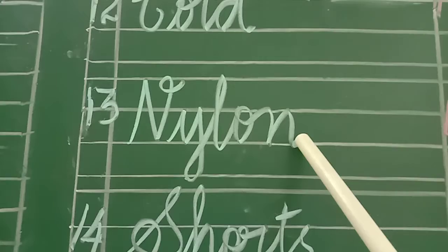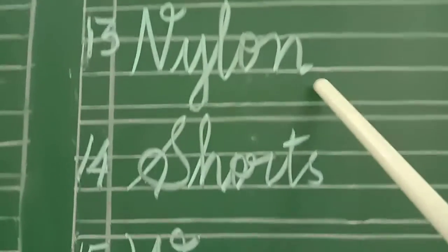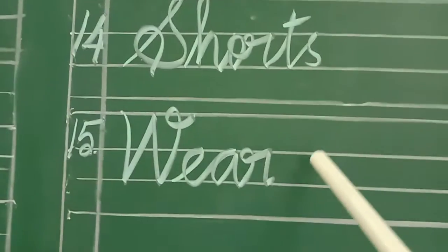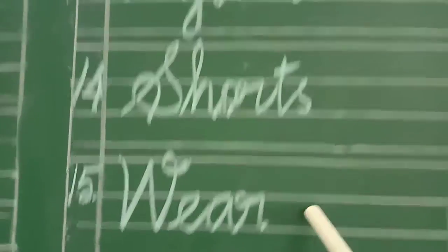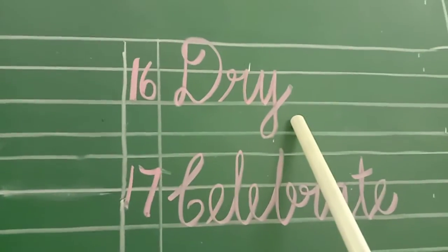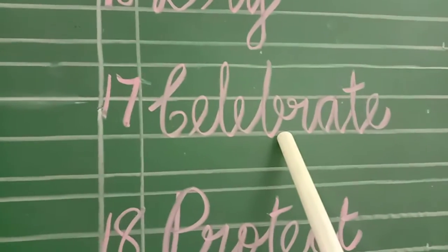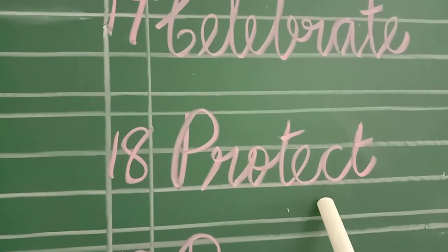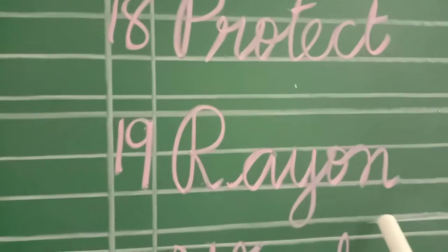Nylon - Kannadipoenra Uruwagai Sairkai Thuny. Shorts - Aadagalil Oruwagai. Wear - Vier. Dry - Ullat Thuult. Celebrate - Kondaducal. Protect - Kapatarutal. Rayon.